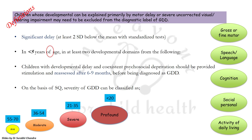Children whose developmental delay in two or more domains can be explained primarily by motor delay, e.g. prematurity, or severe uncorrected visual or hearing impairment, may need to be excluded from the diagnostic label of global developmental delay. For example, children who are born deaf and dumb would obviously show some delay even when neurologically intact, because they cannot listen or follow instructions — they can only learn through vision, smell, and touch. So they should not be called as having global developmental delay unless they show delay even after their hearing or speech has been corrected.